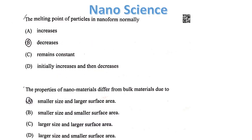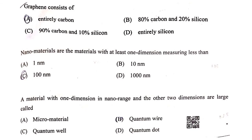Now, questions on nanoscience. The melting point of particles in nano form normally decreases. The properties of nanomaterials differ from bulk materials due to their smaller size and larger surface area. Graphene consists entirely of carbon. Nanomaterials are materials with at least one dimension measuring less than 100 nanometres. A material with one dimension in the nano range and the other two dimensions large is called a quantum well. Thank you. If you like this video, please subscribe, like, and share.